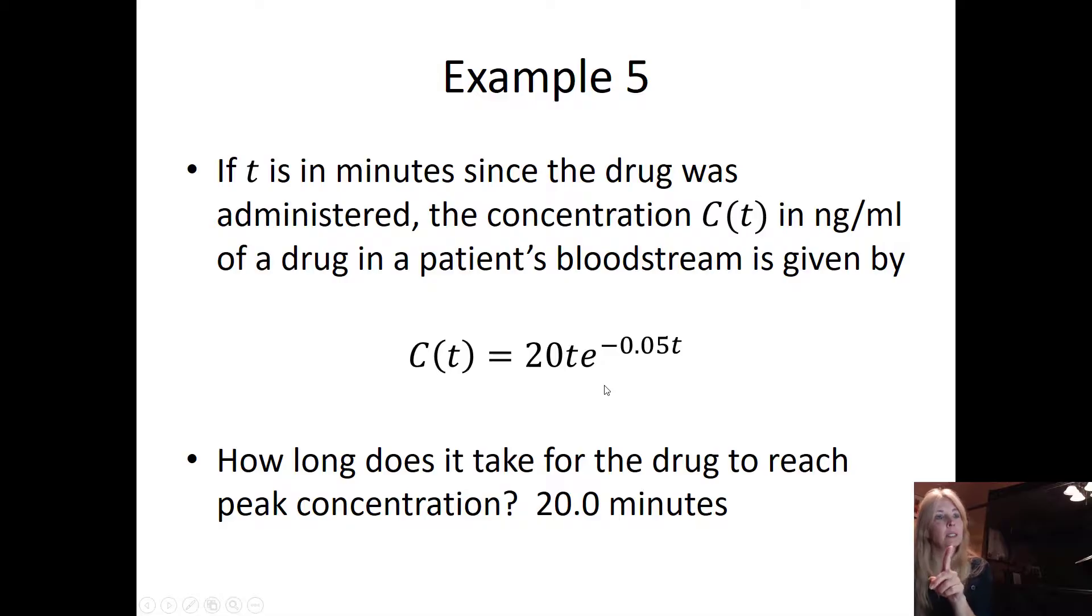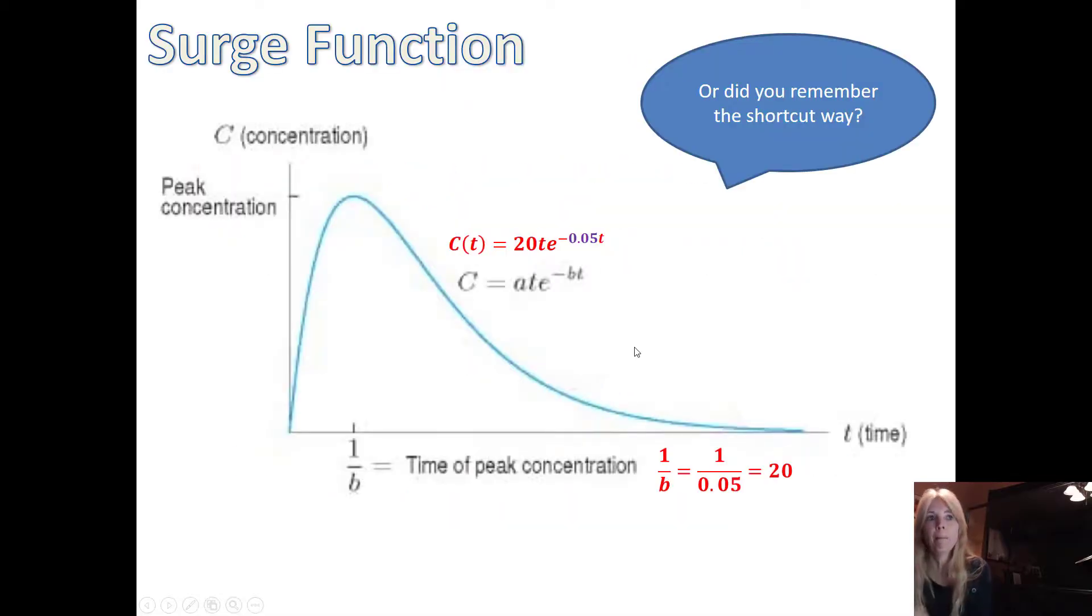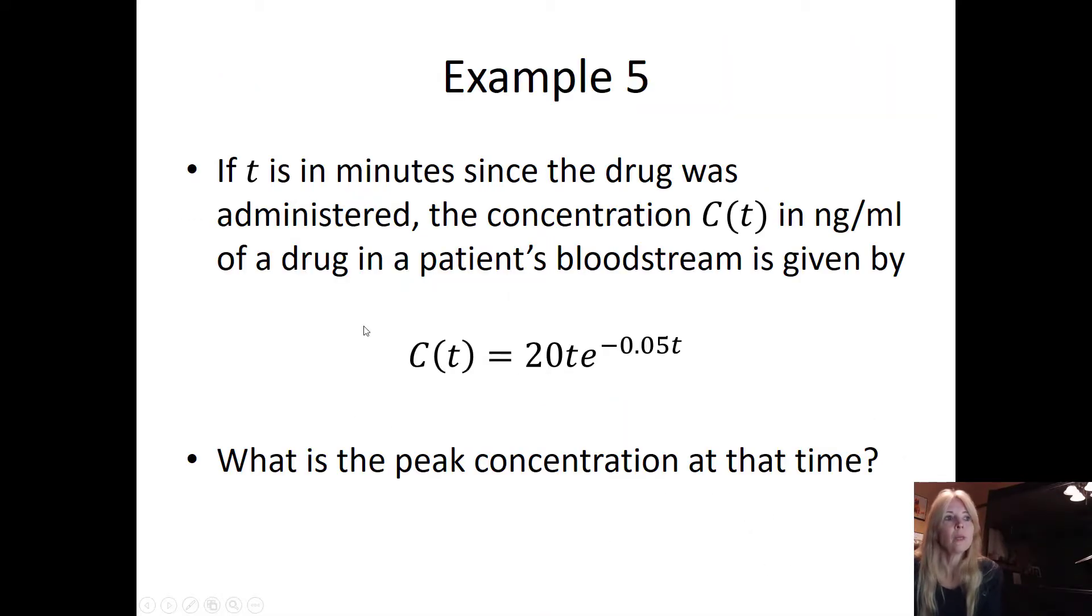If you remember the shortcut way, you just simply do 1 over b, and you get the same answer. That's what's so nice about these functions. All that I did where I found the derivative and set it equal to zero, this just proves that somebody very nice did this for you and said all you have to do is do 1 over this growth rate right here—growth decay. So 1 over 0.05 and you get the same answer.